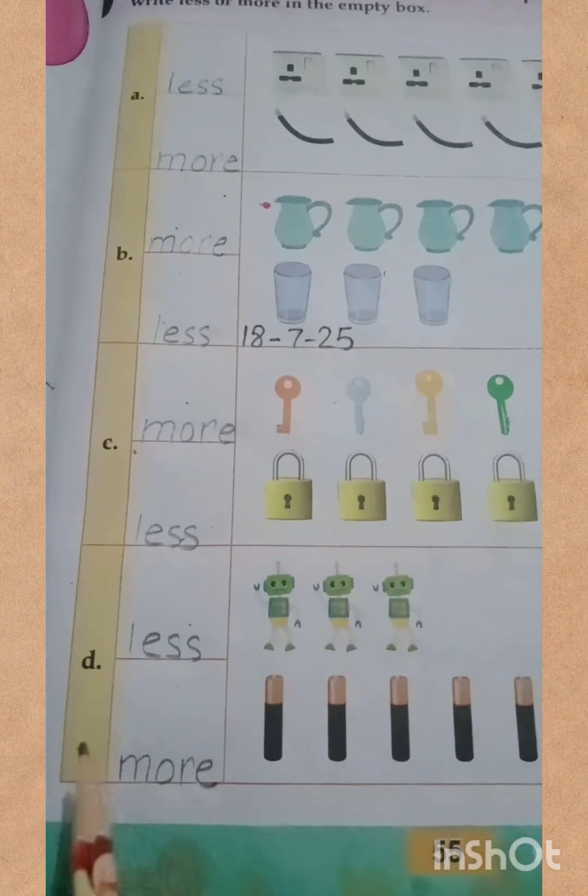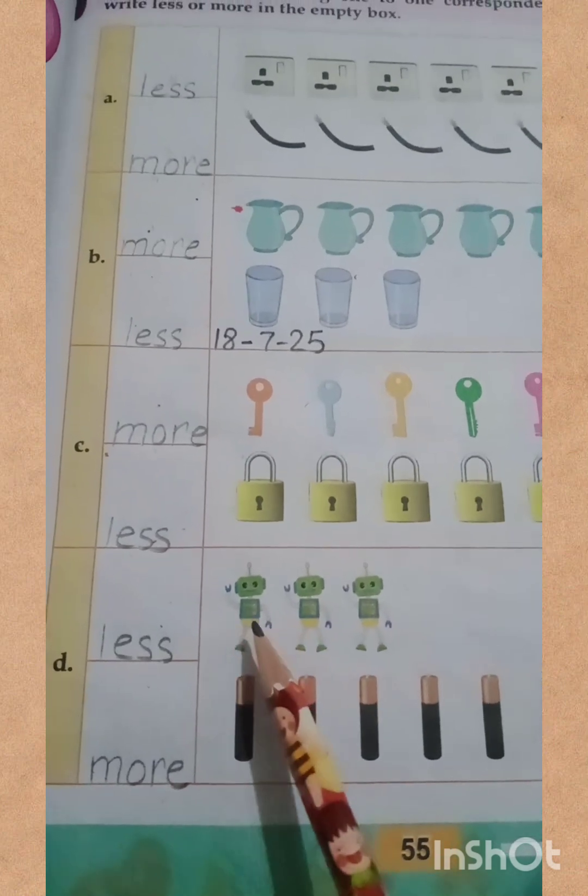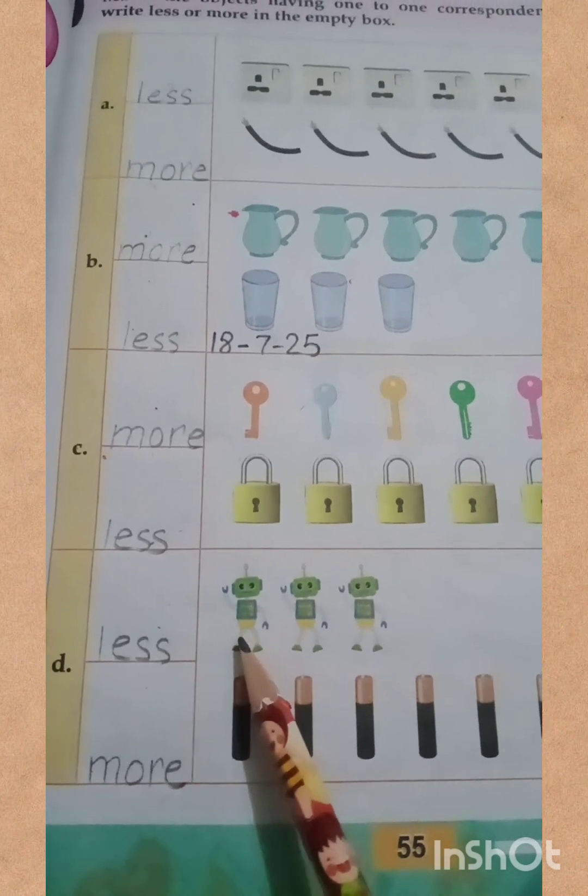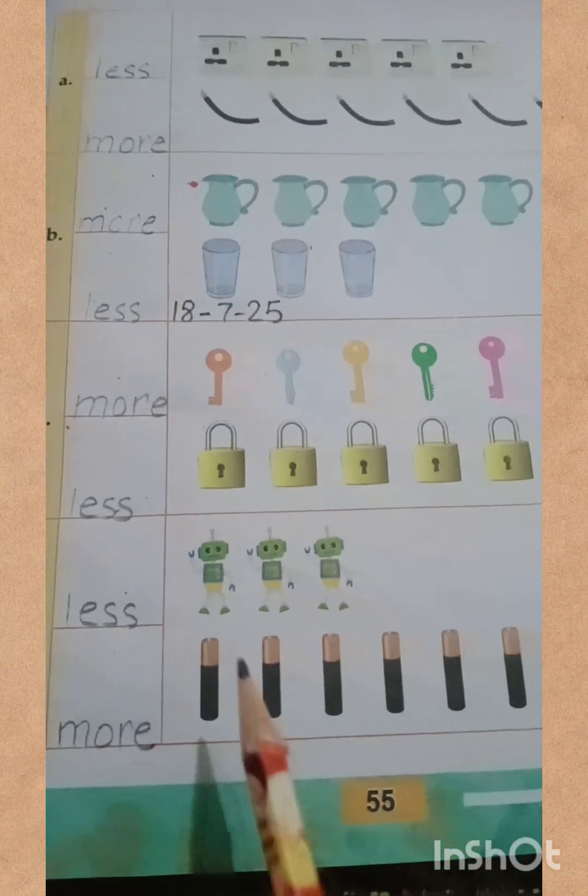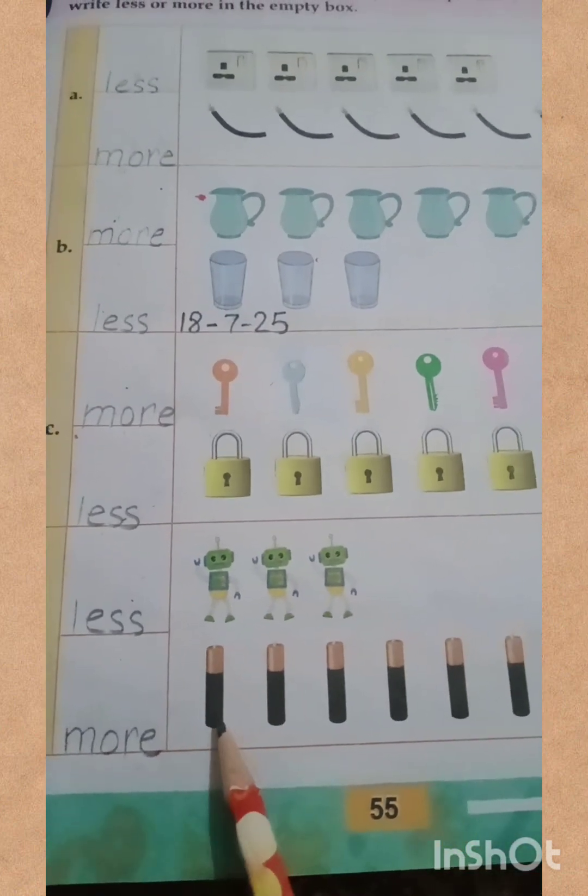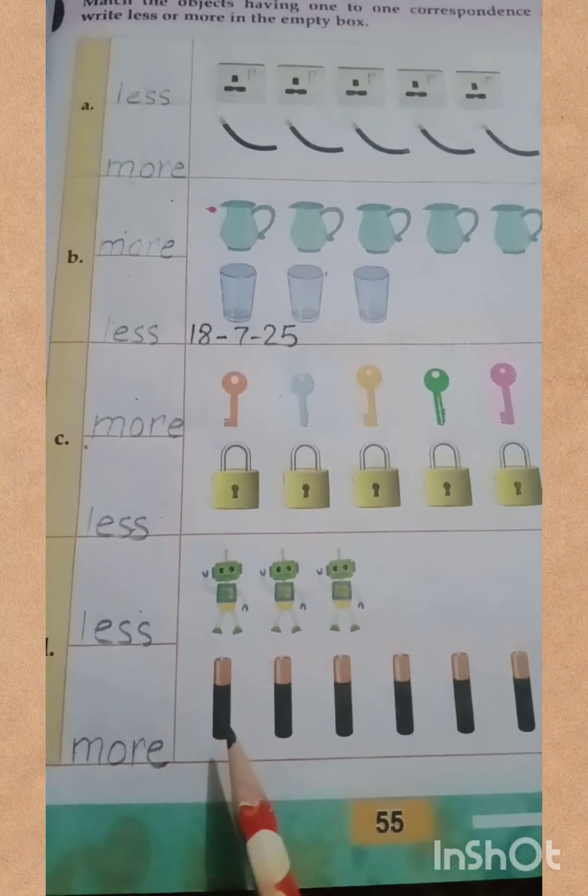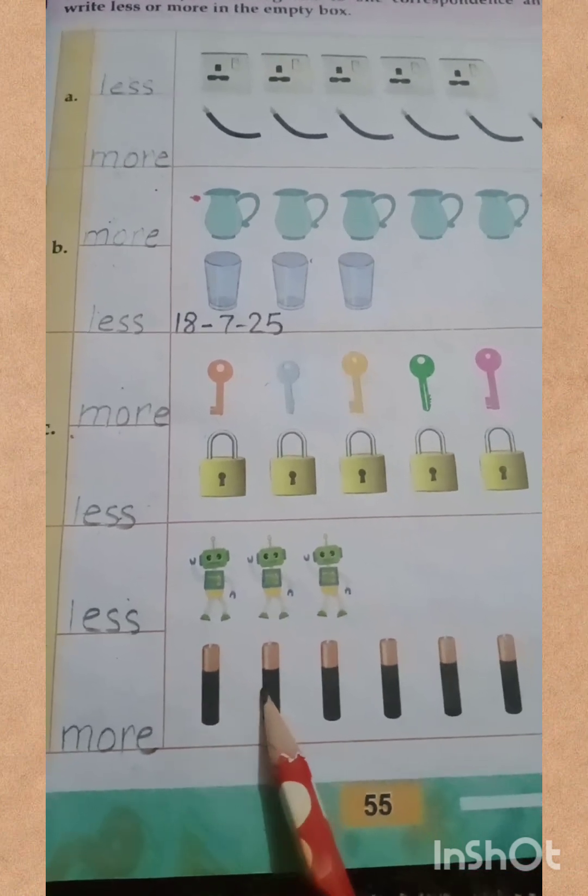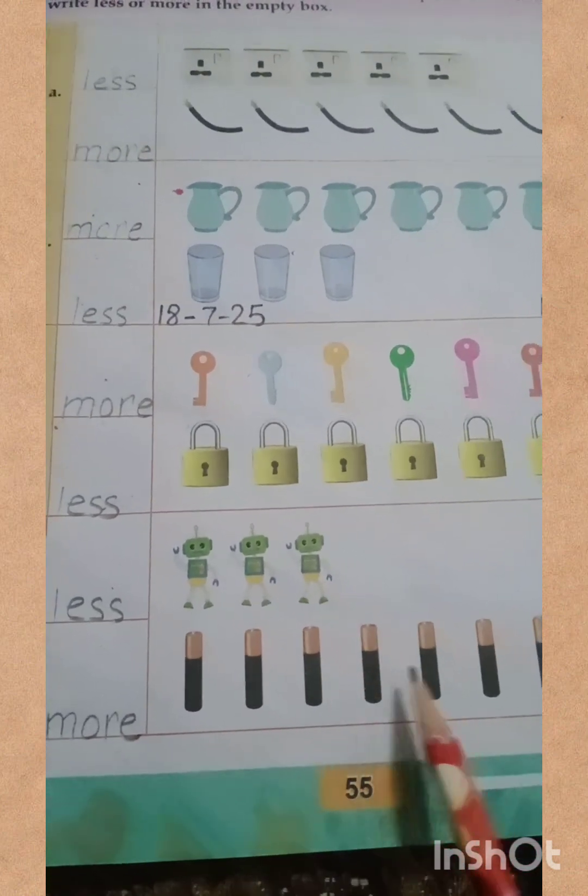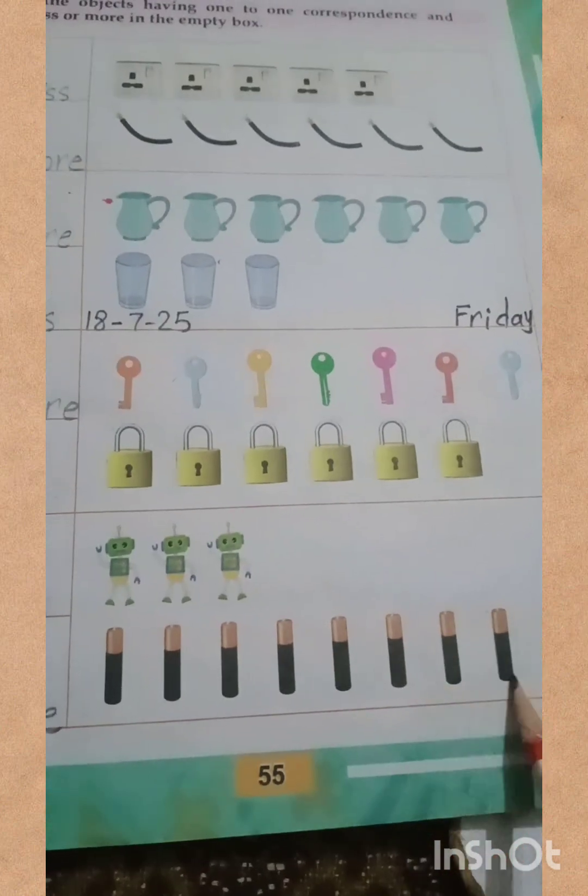The next question, my dear students, you can see the picture of robots. We count it: one, two, three. And you can see the picture of pencils. We compare it with the pencils. Count them: one, two, three, four, five, six, seven, eight.